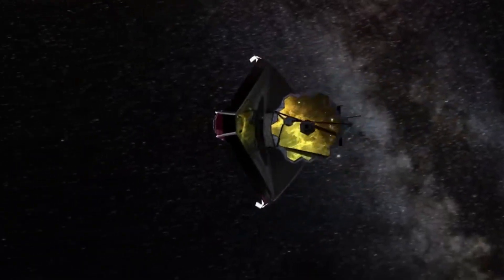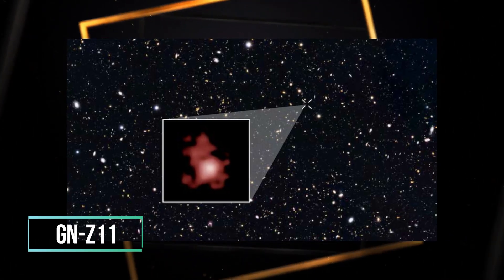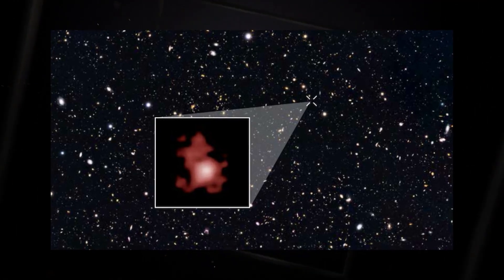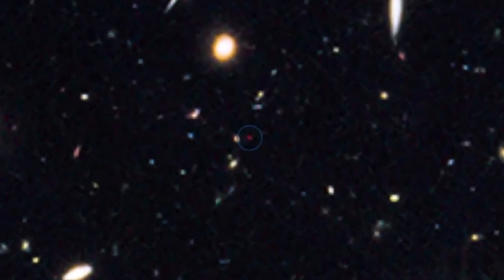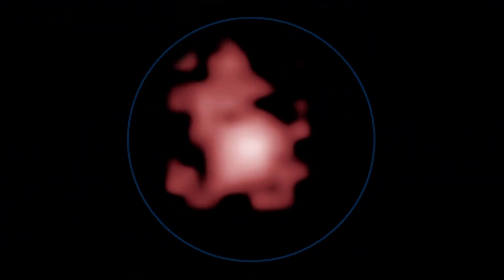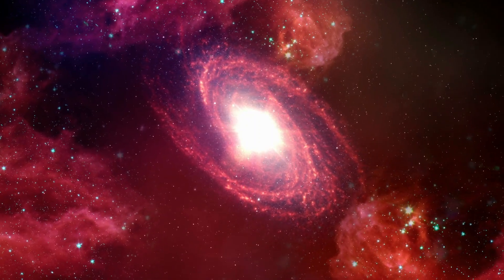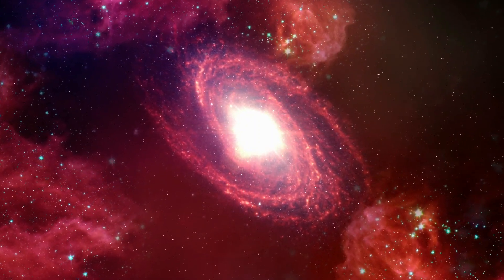Before the James Webb Space Telescope was launched, GNZ 11 was the most distant galaxy that had been proven to exist. Astronomers looked at this galaxy about 420 million years after the Big Bang. This gives it a redshift number of 11.6, which is a measure of how far away it is.